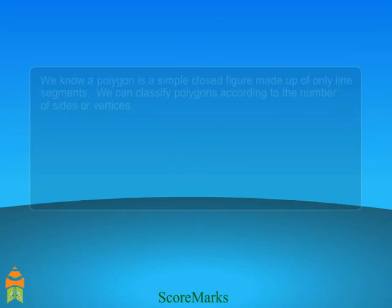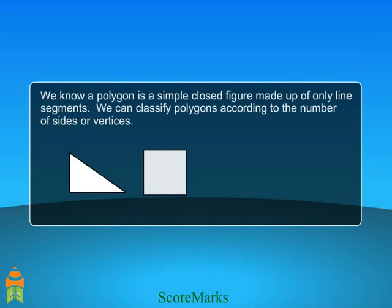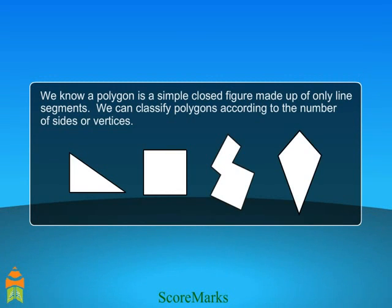Polygon. A polygon is a plane shape with straight sides. There are different types of polygons. Let's understand them.